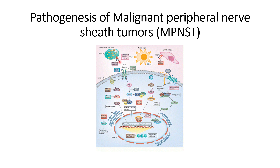To reduce the tumor microenvironment and prevent it from further protecting the tumor cells, its impact can be reduced by inhibiting KIT receptors so that the production of mast cells is reduced. Simultaneously, this will also help in reducing the macrophages within the patient.